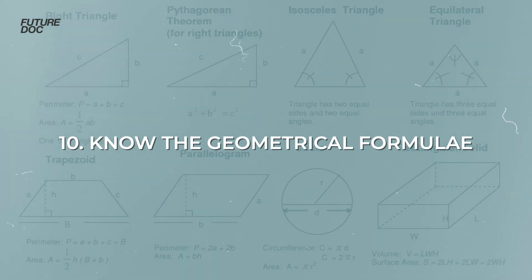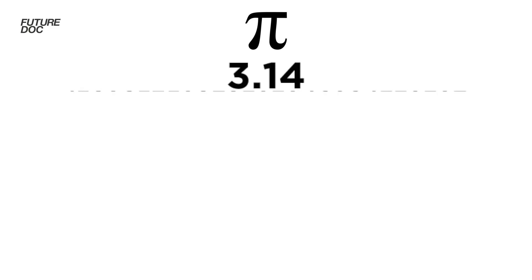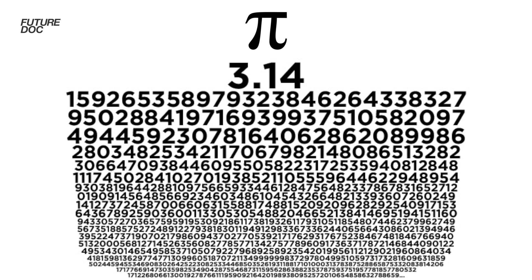Tip number ten is to know your geometrical formulae well. You'll get lots of shapes, volumes, and areas to work out and combine. Know the common 2D shapes: square, rectangle, parallelogram, circle, and triangle. For 3D shapes, learn how to calculate the volume of a box, sphere, cylinder, and cone. A table of these will appear on screen now. Regarding pi: it will usually be simplified to 3 to make calculations practical, or answers may be expressed as representations of pi — such as 36π or 12π.